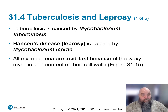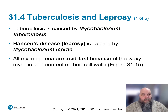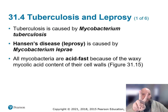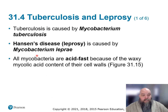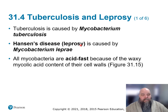Chapter 31, Section 4: Tuberculosis and Leprosy. Mycobacterium is our genus here, with two species — tuberculosis and leprae — causing the diseases tuberculosis and what is now referred to as Hansen's disease, but historically has been referred to as leprosy.